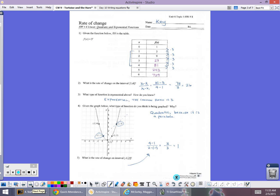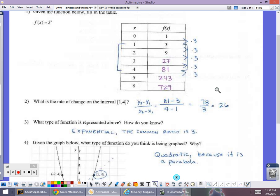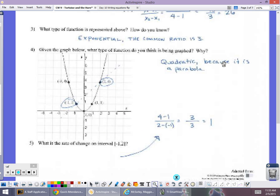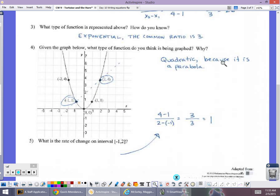So last night's homework, we can go over the answers real quickly. We've got a table of values. We need just to go 81 minus 3 over 4 minus 1. And we found the rate of change is 26, but I didn't have units. So we just wrote 26. It was exponential, we knew that because we were multiplying by 3 each time. This one was quadratic because I could see it was a parabola. We went 4 minus 1 over 2 minus a negative 1. When you take 2 minus a negative 1, you want to be careful to make sure that becomes plus.